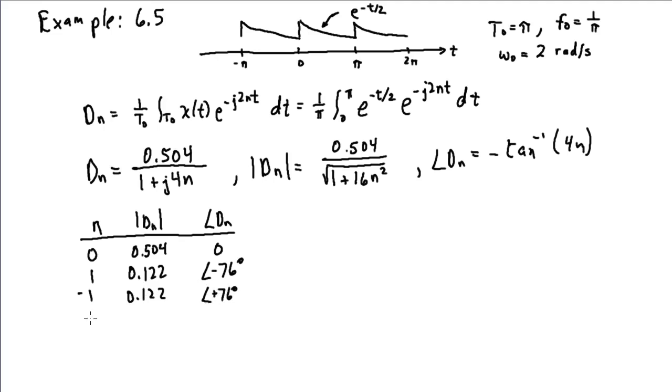And then at 2, 0.063, you can see these are falling off with increasing n. And the angle's minus 83 degrees. And at minus 2, the same amplitude component, an angle of plus 83 degrees.